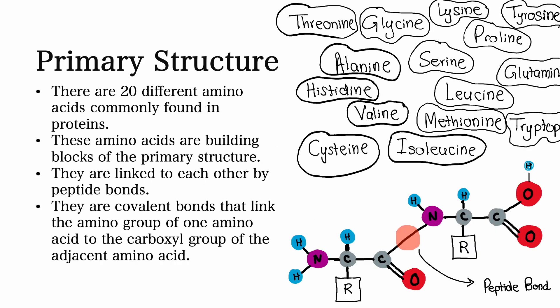There are 20 different amino acids commonly found in proteins. These amino acids are the building blocks that make the primary structure of polypeptide chains.